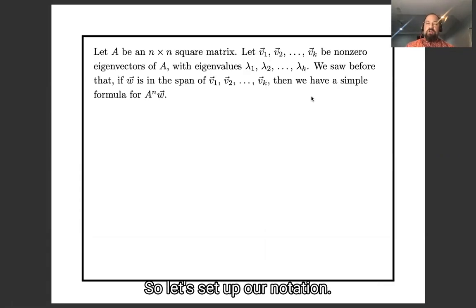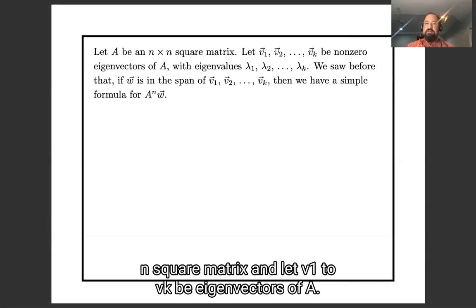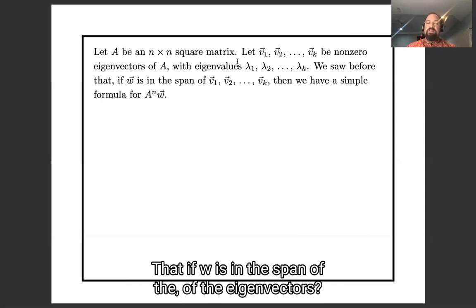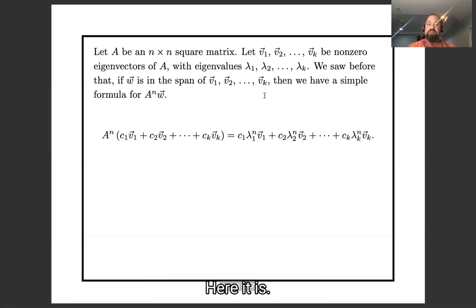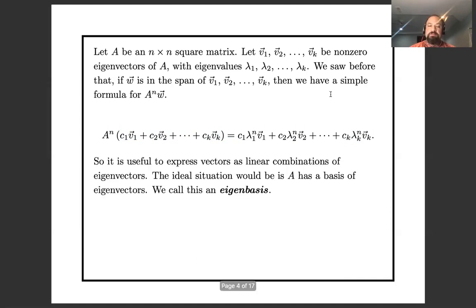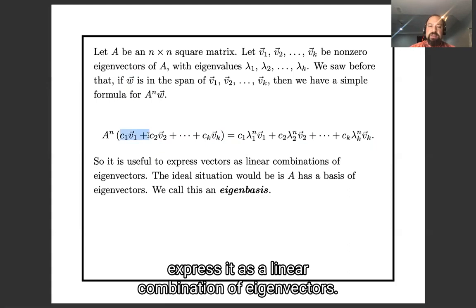So let's set up our notation. Let A be an n by n square matrix. Let v₁ through vₖ be eigenvectors of A, and to be careful, to be non-zero. We have eigenvalues λ₁, λ₂, ... λₖ. And we saw before that if w is in the span of the eigenvectors, then we had a simple formula for A^n w. If w is a linear combination of the eigenvectors, then A^n w is a similar linear combination but with n-th powers of the eigenvalues stuck into each slot.